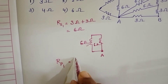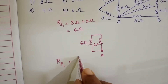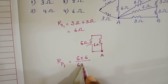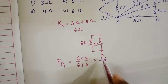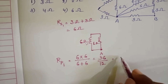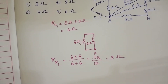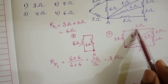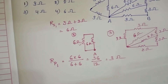Take the formula: R1 × R2 divided by R1 plus R2. So 6 into 6 by 6 plus 6 gives 36 by 12, that is equal to 3 ohm. And now this resistor and this resistor — these two are in series.